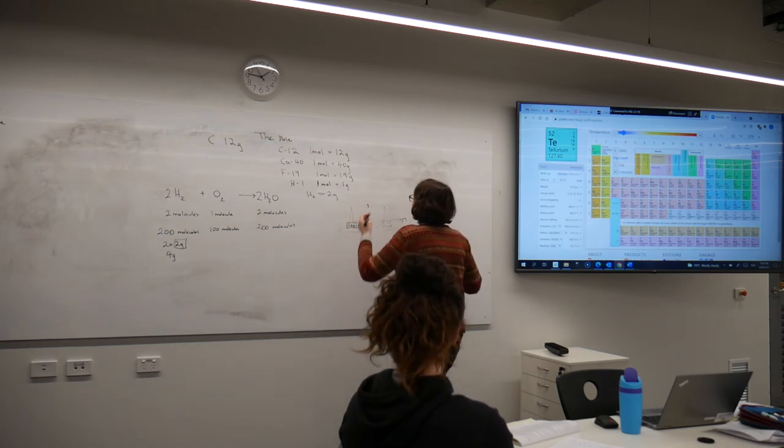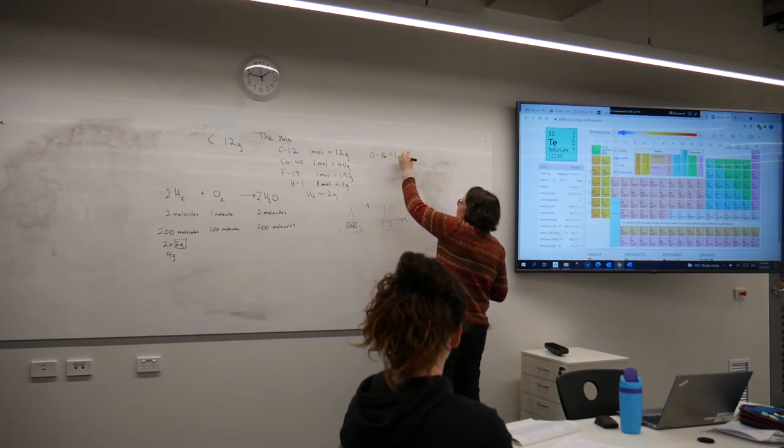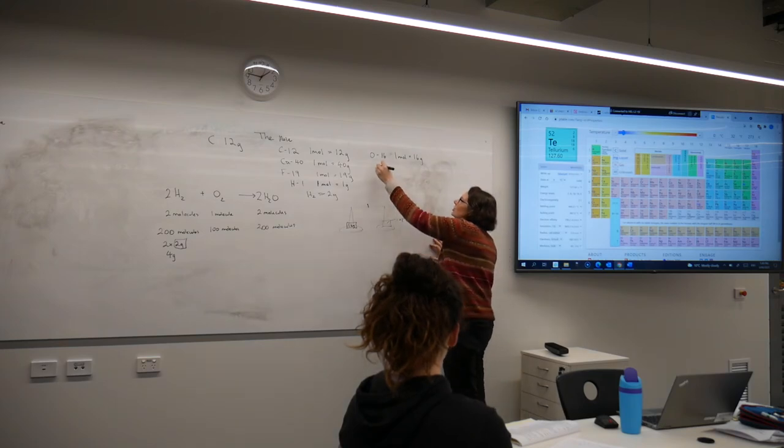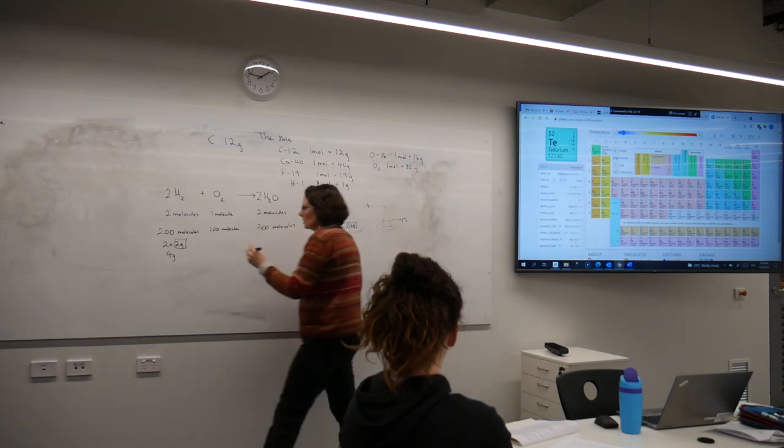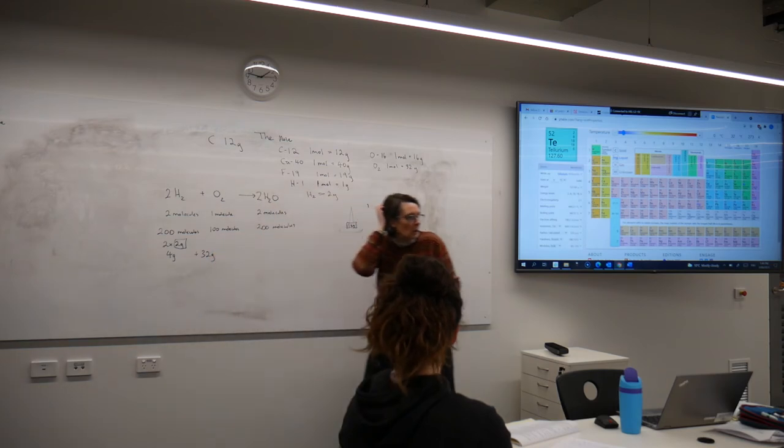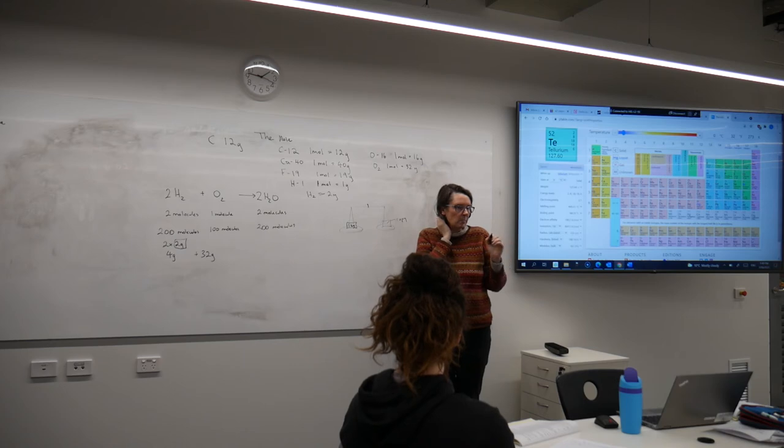So now if I'm thinking moles, look at oxygen. Then one mole of oxygen, 16 grams. But again, it's oxygen gas. One mole will be 32 grams.